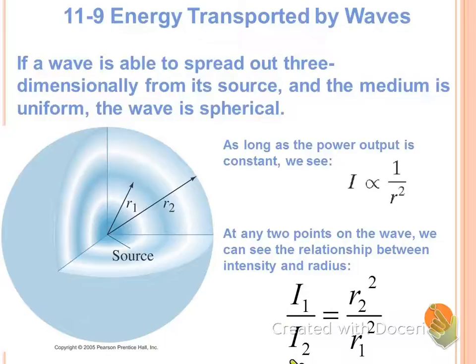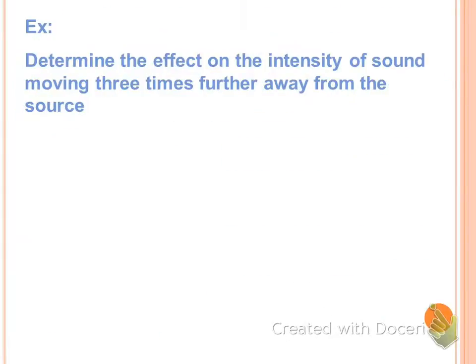Intensity at the first point over intensity at the second point is equal to the radius of the second point squared over the radius of the first point squared. So it's that reciprocal relationship that you see up here. And that's the one that we're going to look at, and that's what we're going to use to compare these two intensities.